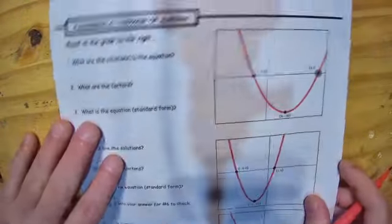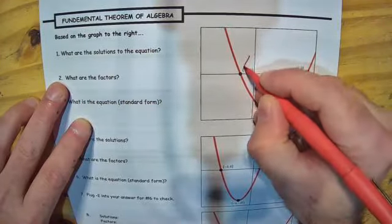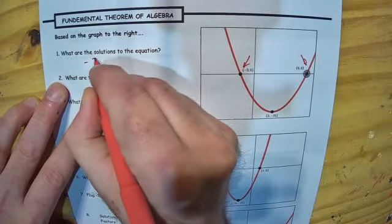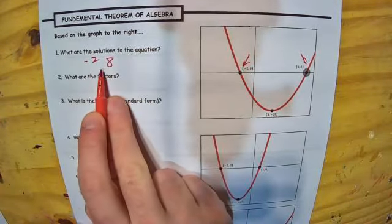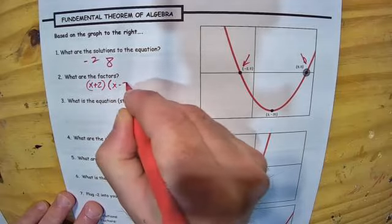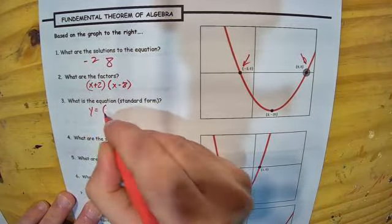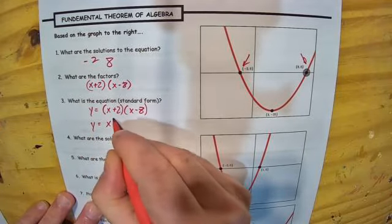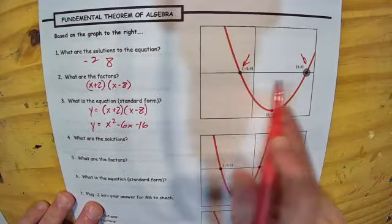On page 14, we're expanding on the relationship between graphs and solutions. Here's a quadratic graph — what are the solutions to the equation? We can see them right here and right here. The two solutions are negative 2 and positive 8. If those are the two solutions, then what are the factors? If negative 2 is the solution, x plus 2 must have been one factor, and x minus 8 the other. So the equation is y equals x plus 2 times x minus 8, which foils out to y equals x squared minus 6x minus 16.